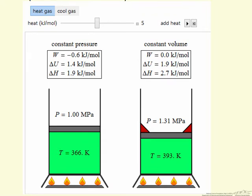This is a snapshot, but we're calculating work, delta U, delta H. The left side is constant pressure, the right side is constant volume.